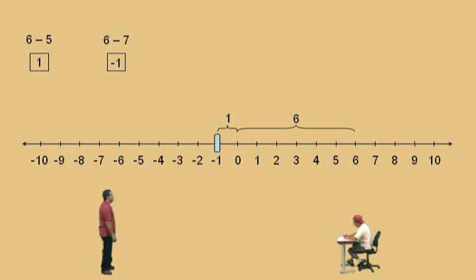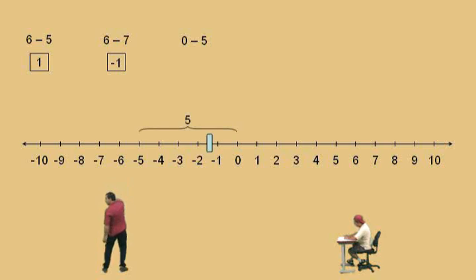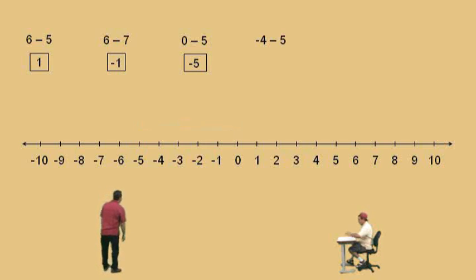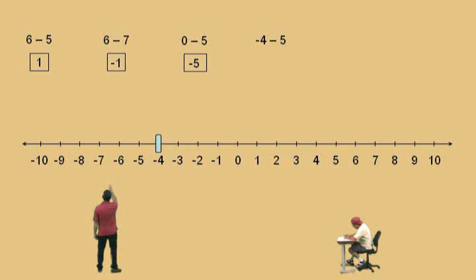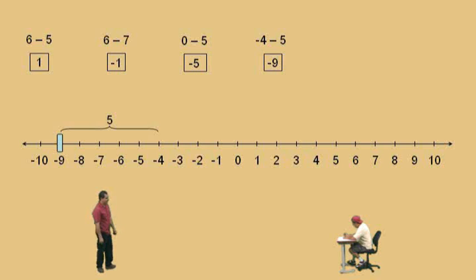Now, 0 subtract 5. Is this answer positive or negative? Negative — because you start at 0 and you move to the left 5 times, giving us our answer? Negative 5. Very nice. Okay, let's do another one: negative 4 subtract 5. We start right here at negative 4, and we move to the left five times, and we end up where? Negative 9. Very nice.